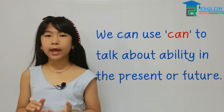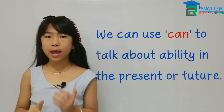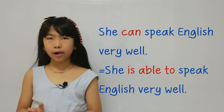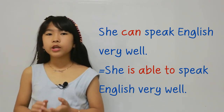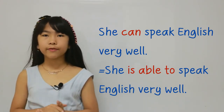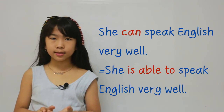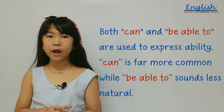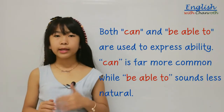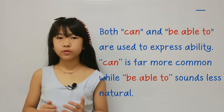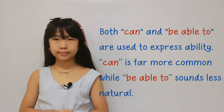You can use can to talk about ability in the present or the future. For example, she can speak English very well. Or, she is able to speak English very well. The two sentences have the same meaning. Both can and be able to are used to express ability. Can is far more common, while be able to sounds less natural.